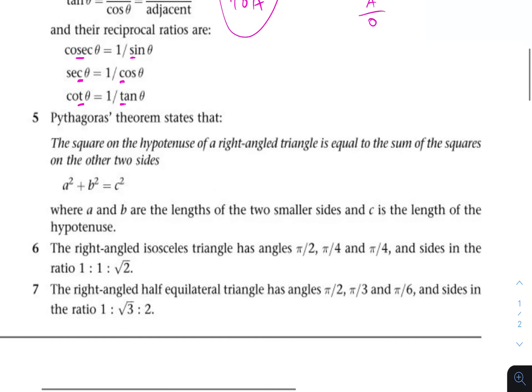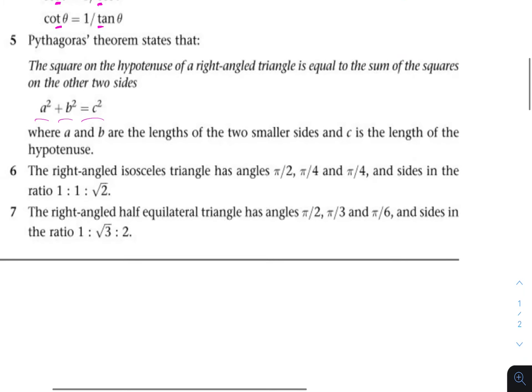Pythagoras' theorem: the square on the hypotenuse of a right angle triangle is equal to the sum of the squares on the other two sides. That is, A squared plus B squared equals C squared, where A and B are the lengths of the two shorter sides and C is the length of the hypotenuse.